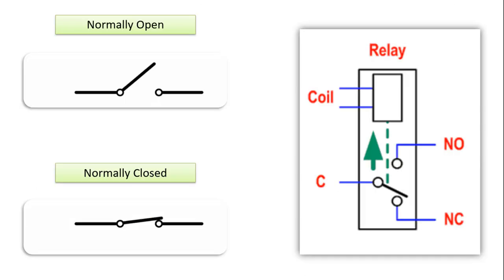Now let's examine the concepts of normally open (NO) and normally closed (NC). A closed switch allows current flow and is therefore on. An open switch does not allow current flow and is therefore off. A normally open (NO) switch has an off resting position; when the switch is pressed, it becomes a closed circuit and is therefore on. A normally closed (NC) switch has an on resting position; when the switch is pressed, it becomes an open circuit and is therefore off.